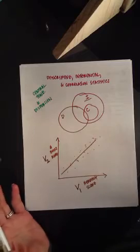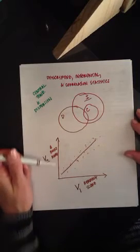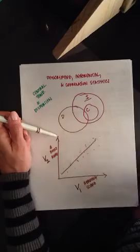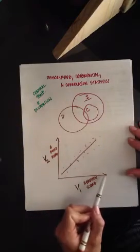So correlation, a positive correlation, means that the more books you read or the more of one thing, then the more of another.